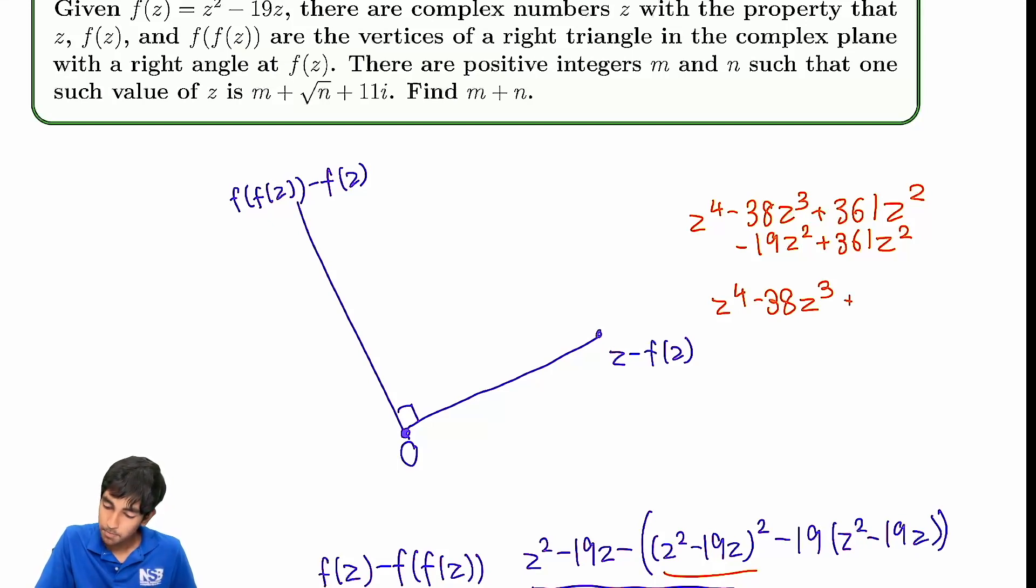Plus 722z squared, and then you subtract 19z squared, so 703z squared. That is all of this stuff. And then now we're doing z squared minus 19z minus that, so we just make everything here minus, and then we add z squared minus 19z. This computation is a little bit annoying.